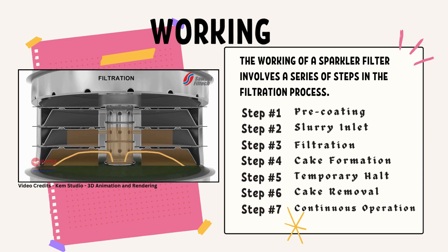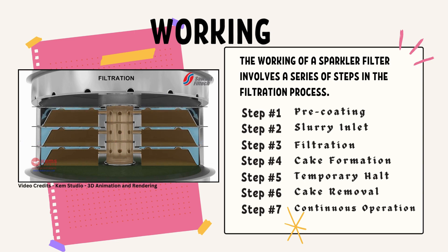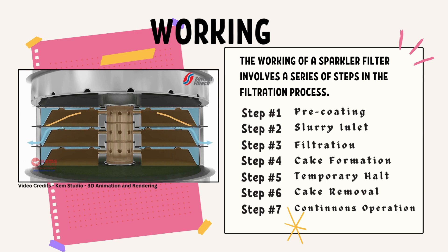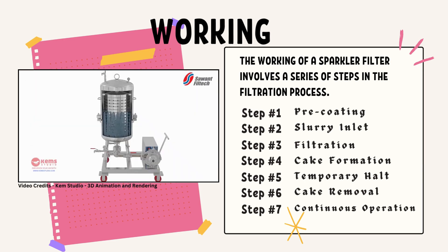The third step is filtration — the slurry flows through the filter plates covered with the pre-coated filter medium, and solid particles in the slurry are trapped on the surface of the filter medium, forming a thick layer. The pre-coated layer acts as a barrier, allowing the liquid to pass through while retaining solid impurities as a cake. Over time, the trapped solid particles accumulate on the filter medium, forming a cake layer that enhances filtration efficiency by providing an additional barrier for fine particles.